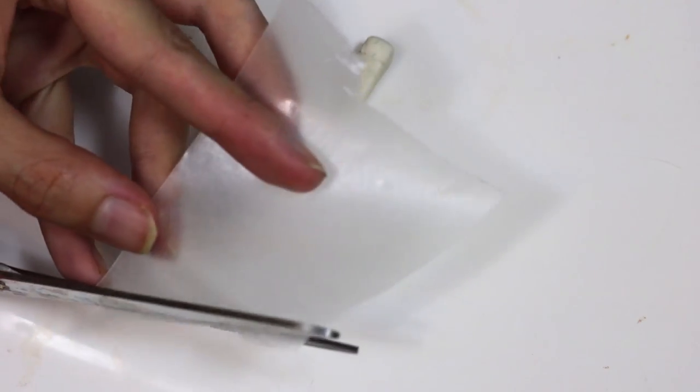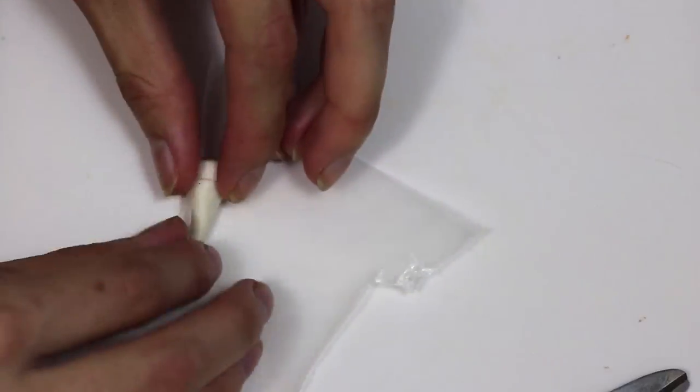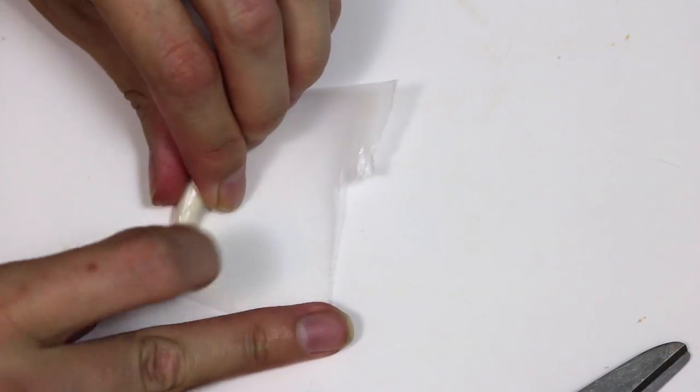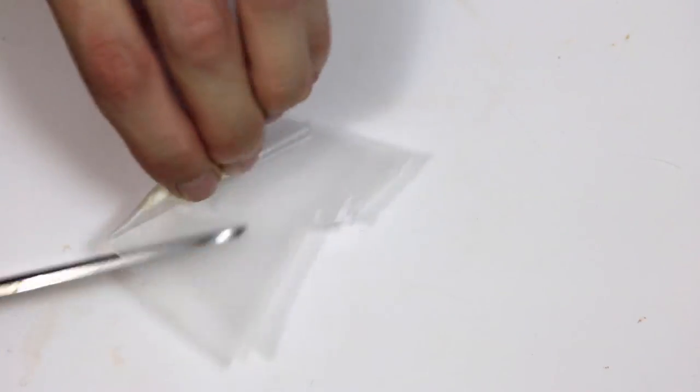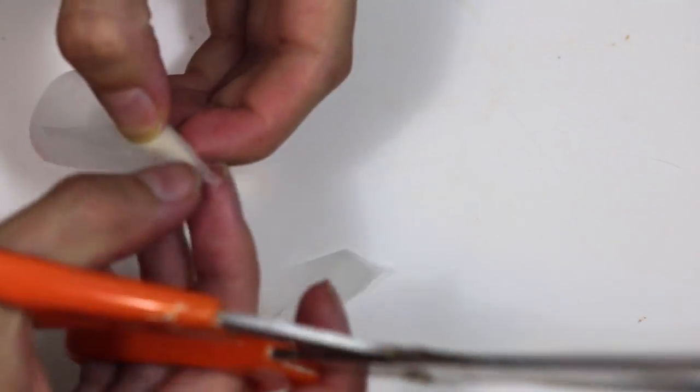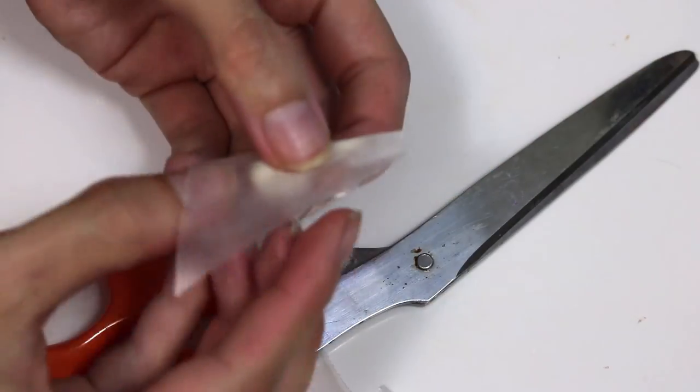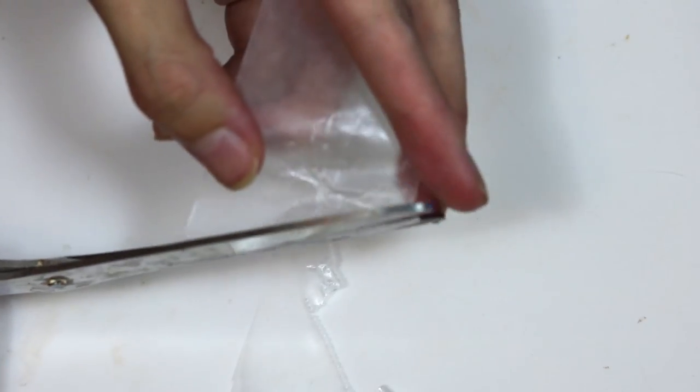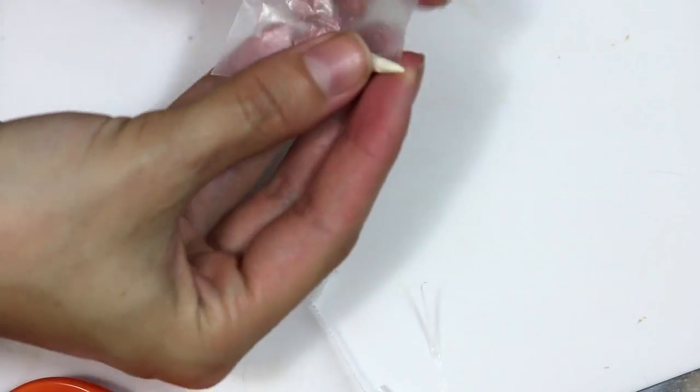Take a small bit of wax paper and wrap it around your white clay. Cut off the excess and cut off the tip. Push the little white bit through the bottom and cut off the excess on the very top.